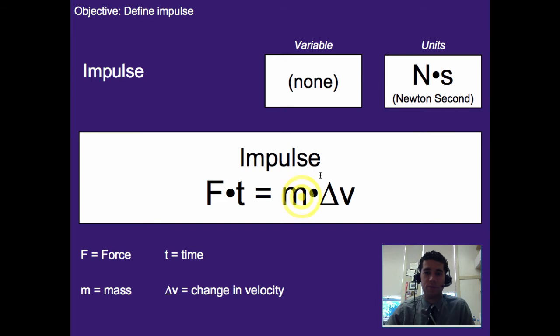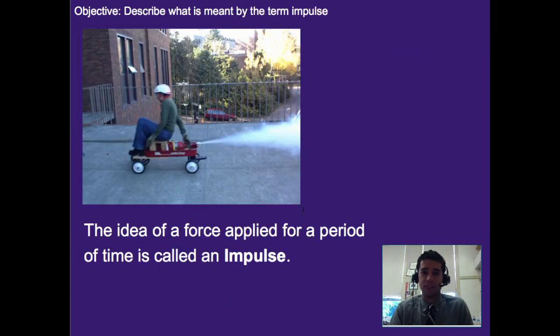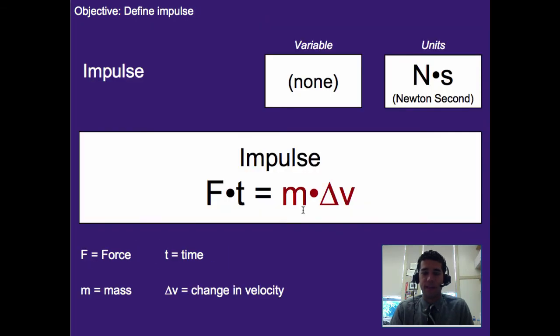There are other units that are acceptable, like kilogram times meter per second, but I find this one to be easier to use. That's what an impulse is, or at least one definition, which is a force applied for a period of time. Now we're going to look at a second definition,